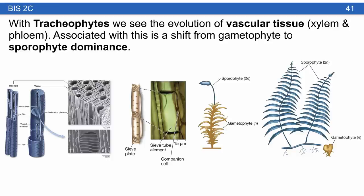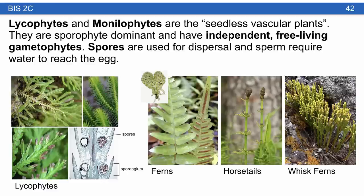Associated with the evolution of vascular tissue is a shift from gametophyte to sporophyte dominance. In a moss, the sporophyte is attached to the gametophyte. In a fern, the dominant large part of the plant is the sporophyte and the gametophyte is much smaller and lives on its own. Lycophytes and monilophytes are the seedless vascular plants — they're sporophyte-dominant with an independent free-living gametophyte. Spores are still the primary mechanism of dispersal and sperm still have to swim through water to reach the egg.